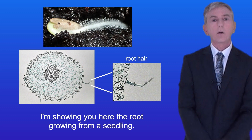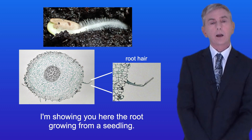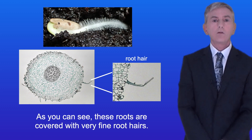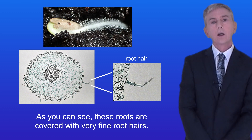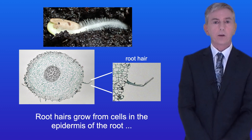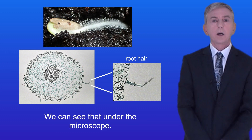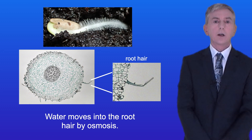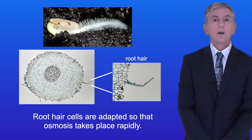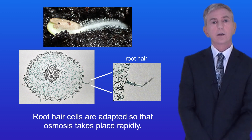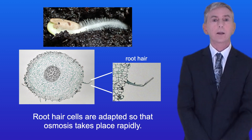I'm showing you here the root grown from a seedling. As you can see, these roots are covered with very fine root hairs. Root hairs grow from cells in the epidermis of the root — in other words the outer layer — and we can see that under the microscope. Water moves into the root hair by osmosis, and root hair cells are adapted so that osmosis takes place rapidly.